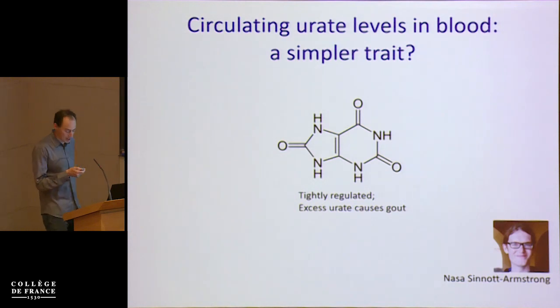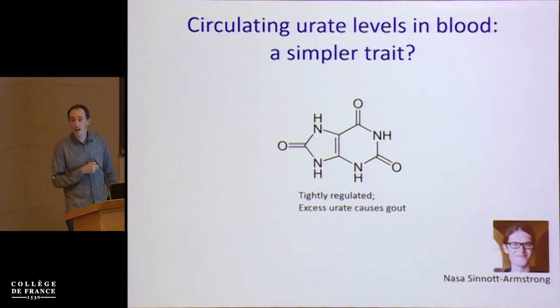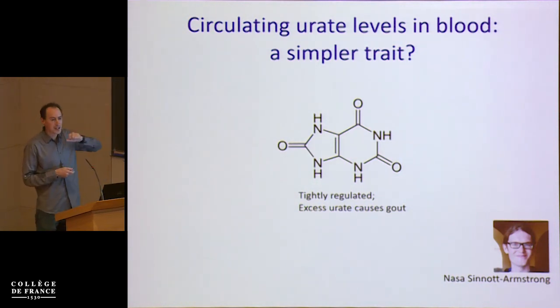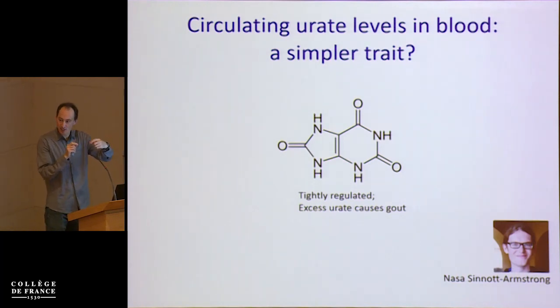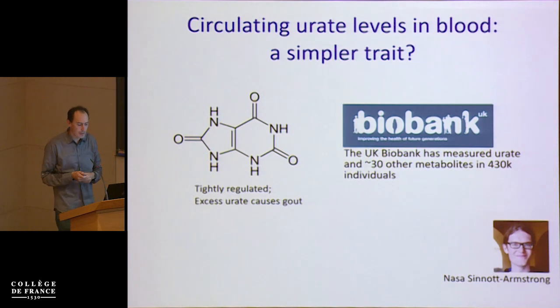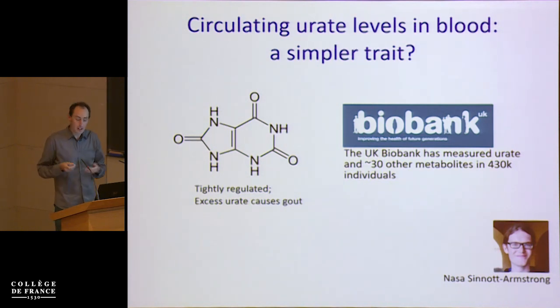What about something simpler? We've started looking at various biomarkers measured in the UK Biobank data. The first of these is circulating urate levels in the blood — a small molecule whose concentrations are tightly regulated. Excess urate leads causally to gout, where urate crystallizes into very unpleasant needles. The UK Biobank has measured urate levels and about 30 other metabolites in 430,000 individuals, enabling very well-powered GWAS to study the genetics of this trait.